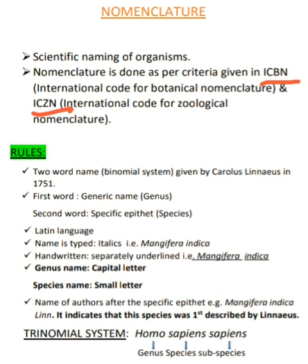The first rule says that every organism or species would be given a two-word name. This is basically a binomial system of nomenclature — 'bi' means two — which was given by Carolus Linnaeus in 1751. The first word is the generic name (genus) and the second word is the species name. The words chosen for the name are usually taken from